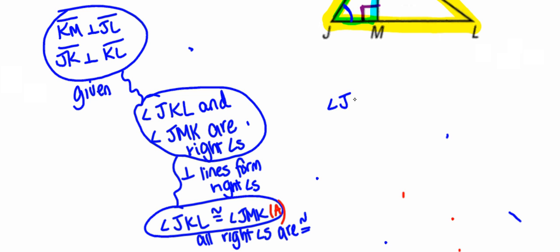These are going to be a little bit more simple because I'm just going to use angle J in the blue triangle congruent to angle J in the yellow triangle. And that property that we use any time we want to state that something or any geometric figure is congruent to itself is the reflexive property.